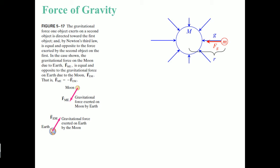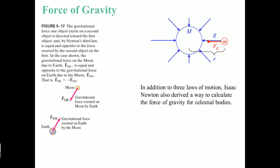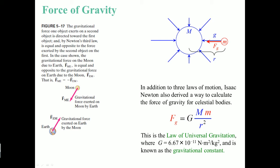We can look at the force of gravity that exists. If we put an object in Earth's gravitational field, there is a gravitational force exerted on the Moon by the Earth. Due to Newton's Third Law, there's an equal and opposite force — a gravitational force exerted on Earth by the Moon. In addition to the three laws of motion, Sir Isaac Newton also derived a way to calculate the force of gravity for celestial bodies. FG equals big G times big mass M — the mass of the Earth — times little m, the smaller mass, divided by the radius squared. The radius goes from the center of the big mass to the center of the small mass.